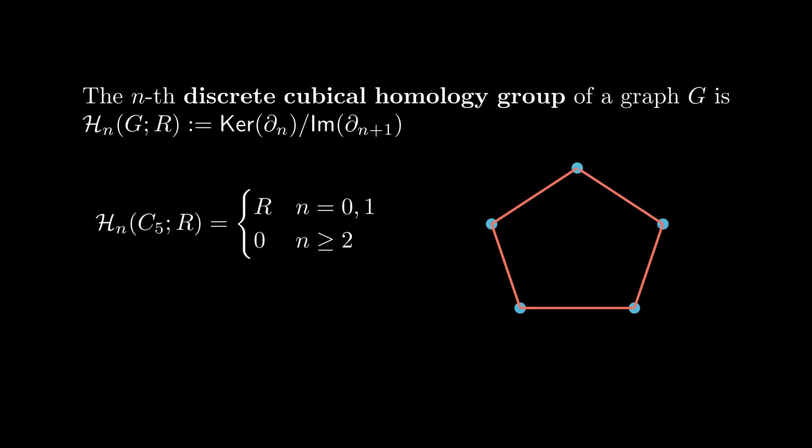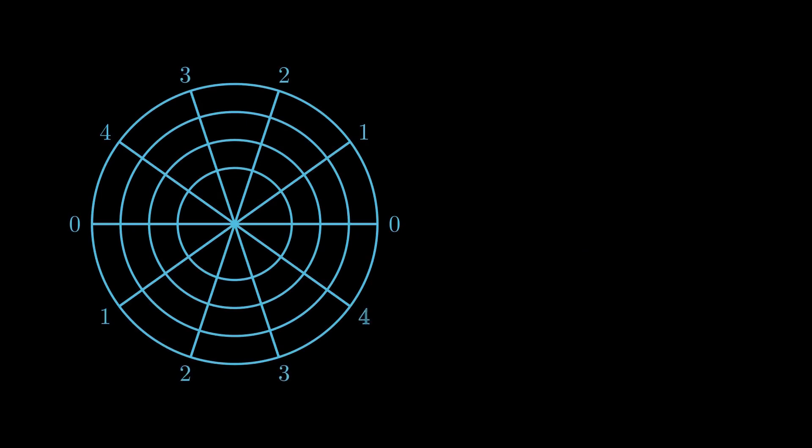We also have models in graphs of many other famous topological spaces, such as RP2, where the graph version of RP2 is this graph here. We kind of take this disk and you quotient by antipodal points. And we have that the first homology group of the graph version of RP2 is z mod 2 over z.